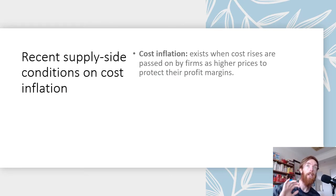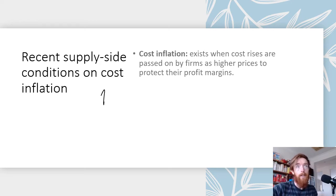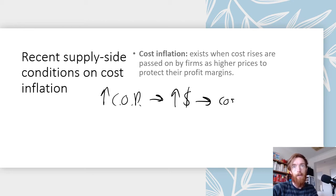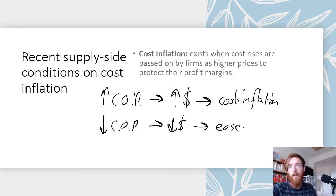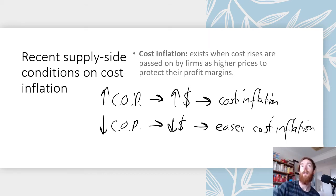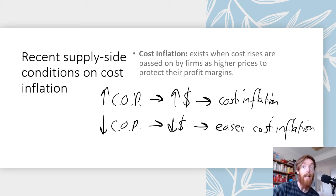Cost inflation exists when cost rises are passed on by firms as higher prices to protect their profit margins. Cost inflation happens in one of two ways: either businesses have an increased cost of production and therefore increase their prices to protect profit margins, leading to cost inflation; or businesses have a lower cost of production through cheaper resources or increased efficiency, which leads to lower prices or more production at the same price, and that eases cost inflation.